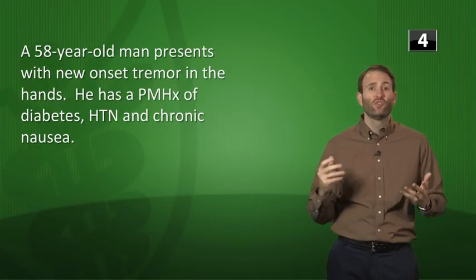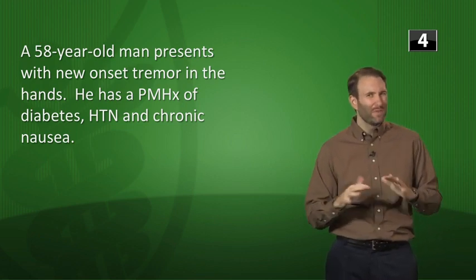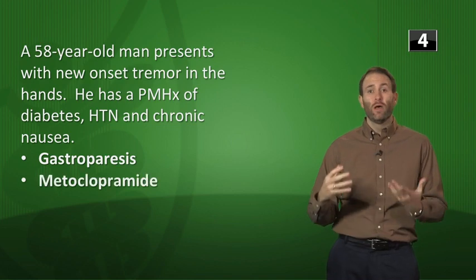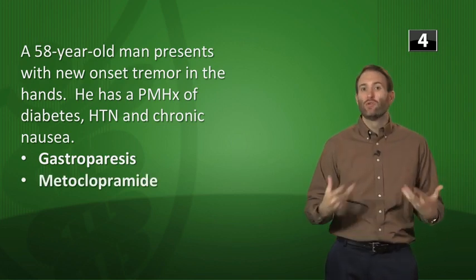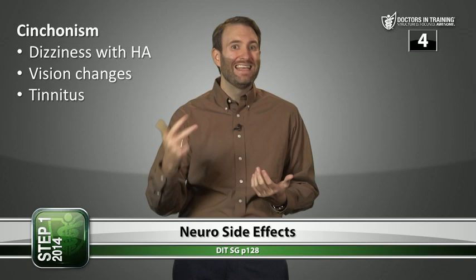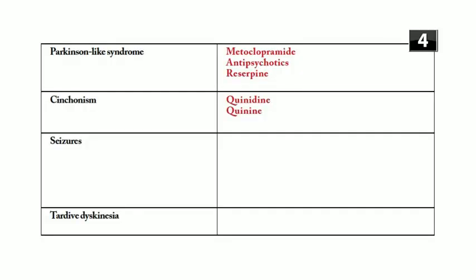Neuro vignette: a 58-year-old man with diabetes and chronic nausea presents with new-onset hand tremor. He likely has gastroparesis treated with metoclopramide, which can cause a Parkinson-like syndrome with tremor. Antipsychotics and reserpine also cause this. Cinchonism — dizziness, headache, vision changes, and tinnitus — is caused by quinidine (class 1A antiarrhythmic) or quinine. Both Q drugs.